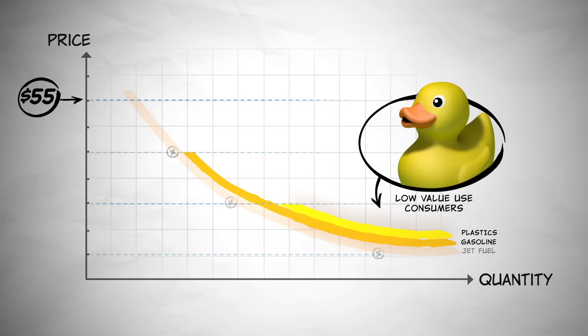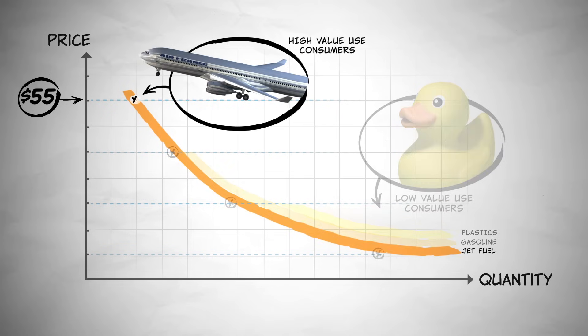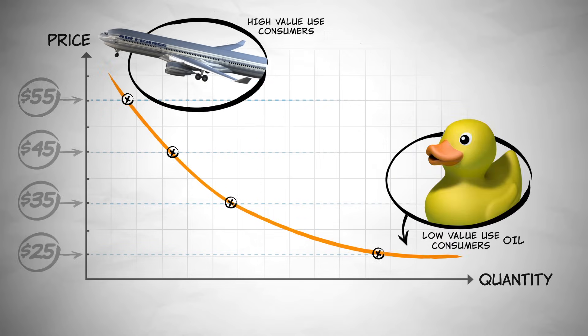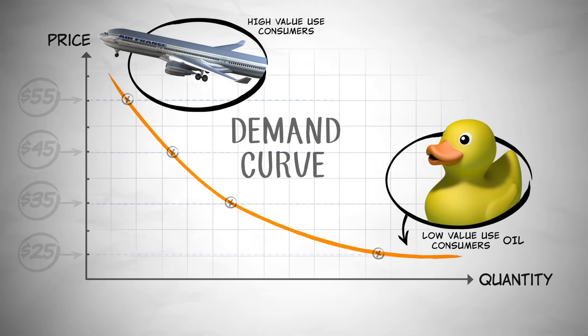At these high prices, the demanders that are left are the ones who value oil the highest. For them, the benefit of having planes that fly outweighs the increased cost — they still demand oil. So, with a simple line, the demand curve summarizes all the many and diverse ways that people respond to a change in price.